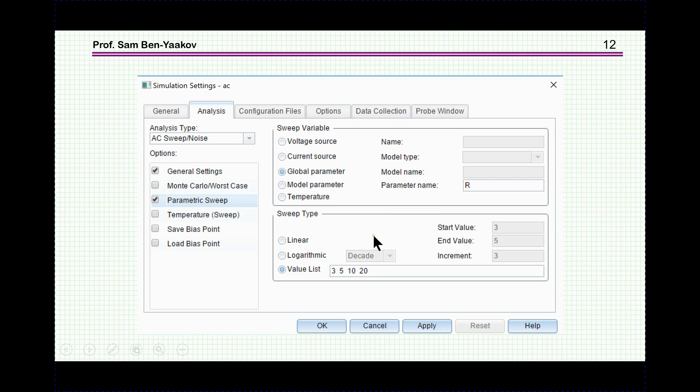Now, the beauty, of course, is that you can run AC analysis. And here, I'm also using a parameter sweep. In this case, I'm choosing four resistors. These two are CCM. These two are DCM.